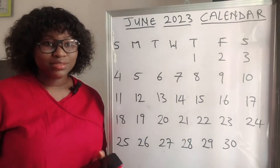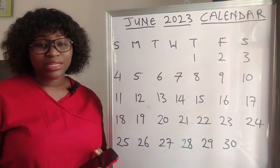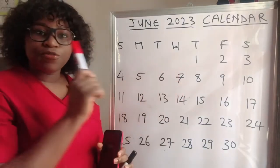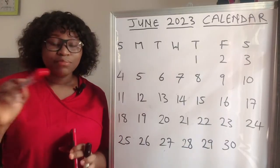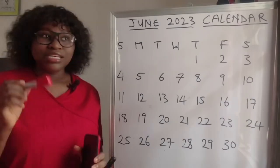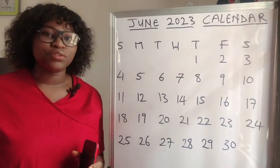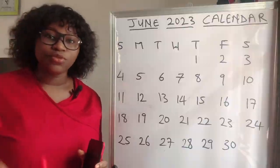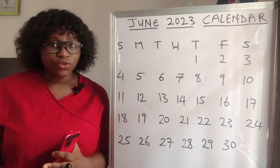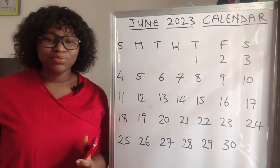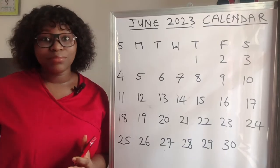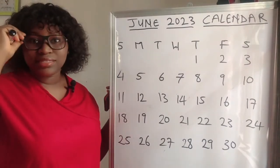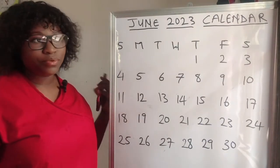This video is going to be about how to calculate your menstrual cycle, and we'll be using this June 2023 calendar. Menstrual cycle length is from the first day of your period to the last day before your next period — not from the first day of one period to the first day of another. The first day of the next period belongs to another menstrual cycle, so you don't count that.